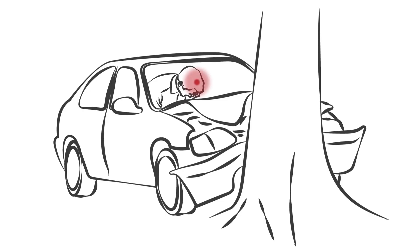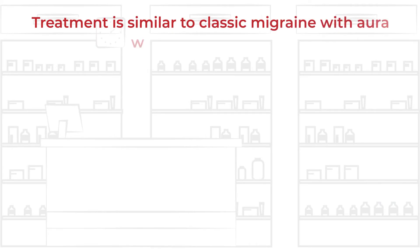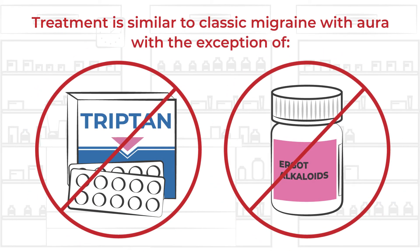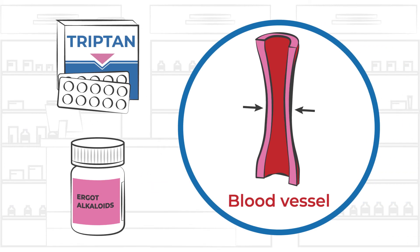Hemiplegic migraine can also be the result of brain trauma. Treatment is similar to classic migraine with aura, with the exception of triptans and ergot alkaloids. These medications can cause constriction of blood vessels and increase the risk of stroke.